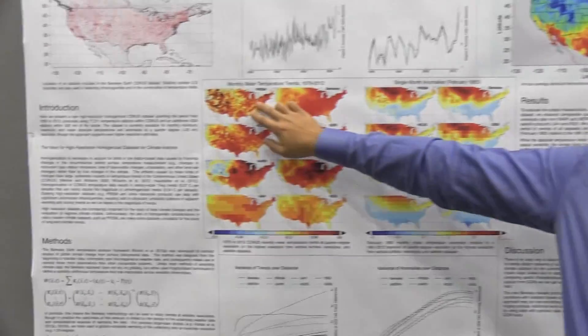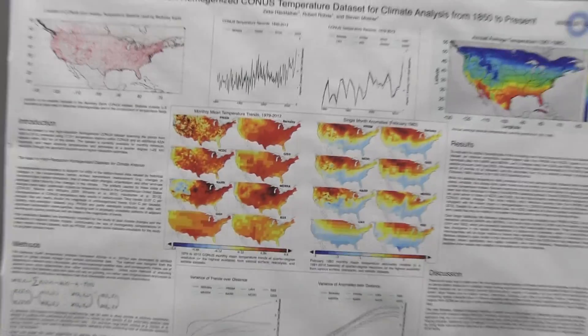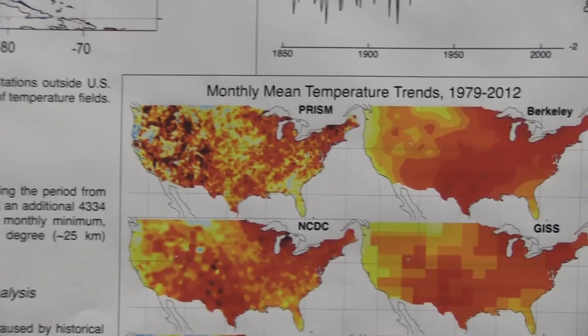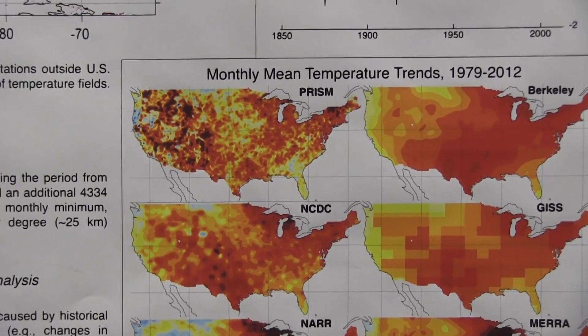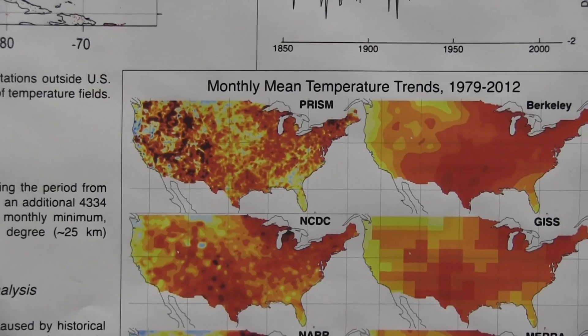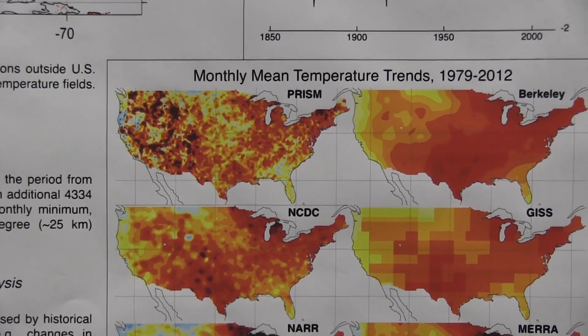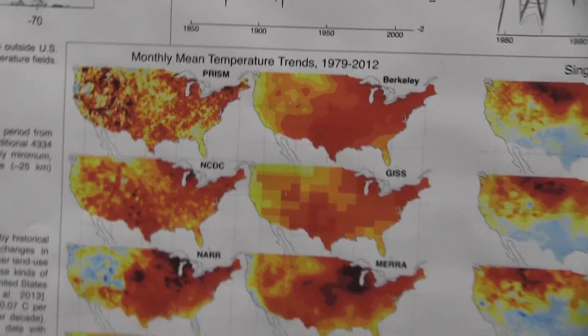Previously, the only high-resolution dataset available for climate analysis was something called PRISM. You can see its 30-year trends right here. The problem with PRISM — and the people who make it acknowledge this — is that the data is not corrected for things like station moves, time of observation changes, instrumental changes, and all these other so-called inhomogeneities, which can create non-physical patterns. PRISM shows some very strange behavior over 30 years: regions warming by half a degree within 50 kilometers of regions cooling by half a degree, and there are basic thermodynamic reasons to expect that behavior is not physically realistic.